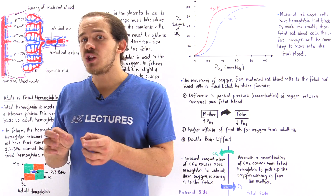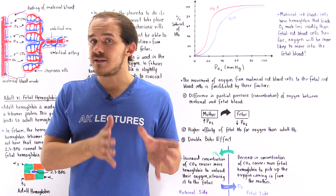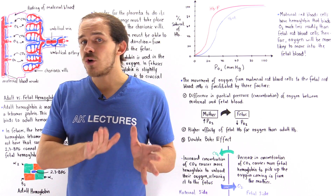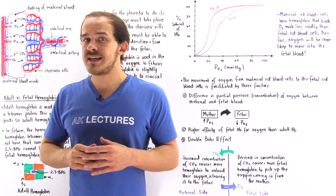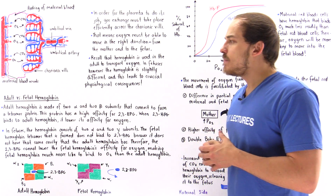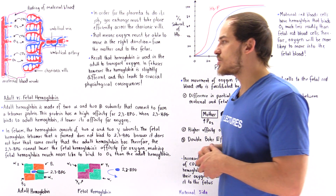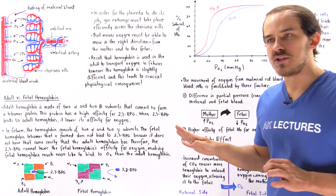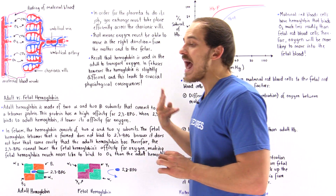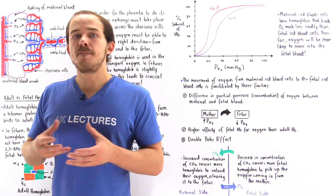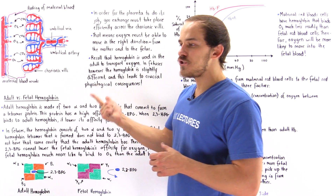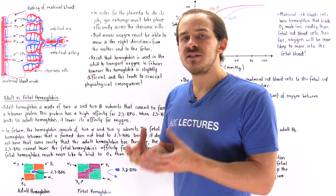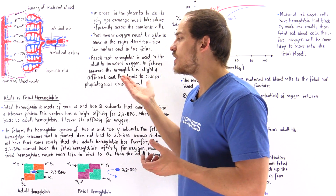The type of hemoglobin found in adults is different from the type found in the fetus. In adults, hemoglobin consists of four subunits: two alpha subunits and two beta subunits — alpha-1 and alpha-2 combined with beta-1 and beta-2 — forming a protein tetramer called adult hemoglobin.